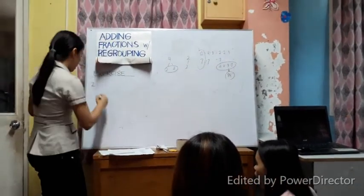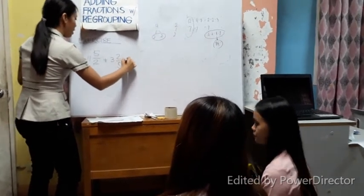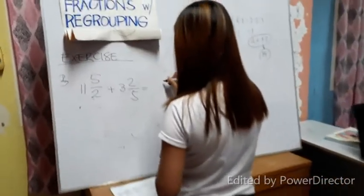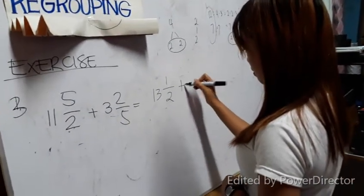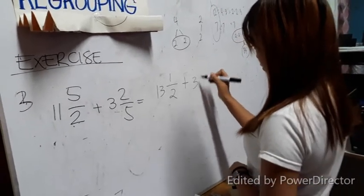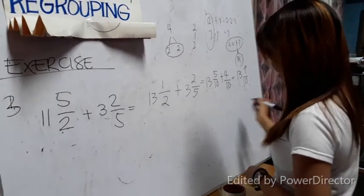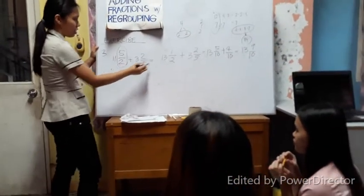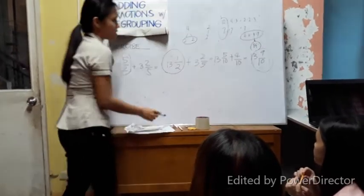Another problem — still needs regrouping: 11 and 5 over 2 plus 3 and 2 over 5. Chris, please honor us with your solution. Perfect. Very good. What she did was first transform this into a proper fraction, and then the LCD is 10, which leads us to the correct answer. Chris, this is you!